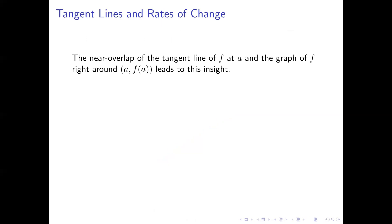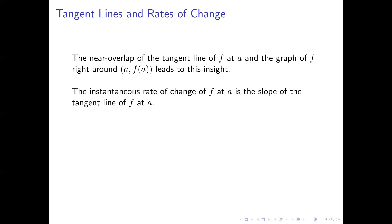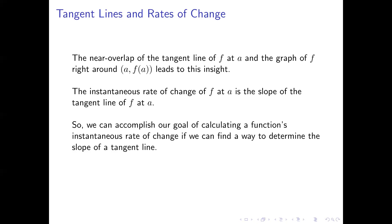Here's the key insight: the fact that the tangent line of f at a and the graph of f around the point (a, f(a)) overlap almost perfectly leads us to the following idea. We can define the instantaneous rate of change of our function at the point where x equals a to be the slope of the tangent line of the function at a. And what this means is that if we can find a way to figure out the slope of a tangent line, that will give us the instantaneous rate of change of our function at that point — which is what we're looking for.